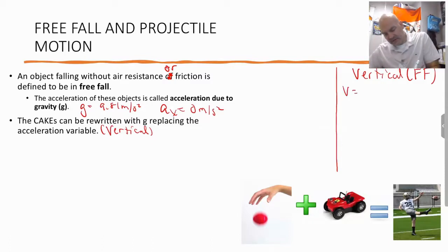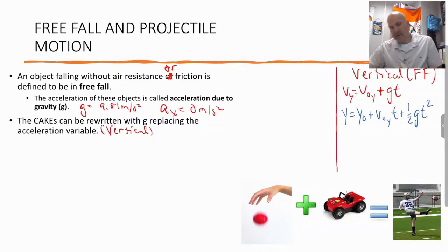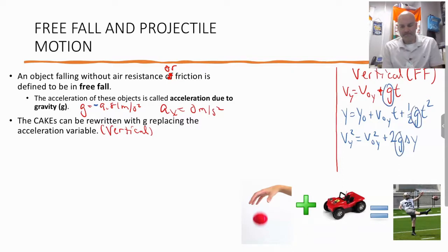for little subscripts and simply do plus gt. I can change this to a y since we are talking vertical. So plus gt squared. In fact, this g will always be negative. So you can actually, if you want to make it even easier, instead of just putting gt or one-half gt squared, put minus gt or minus one-half gt squared. And then you have the equation with no time. These are what we call our free fall equations. So all I've done is wherever I see an a, I've replaced it with a g.